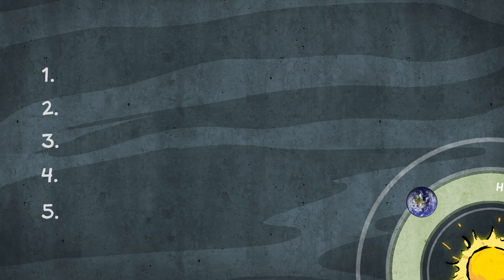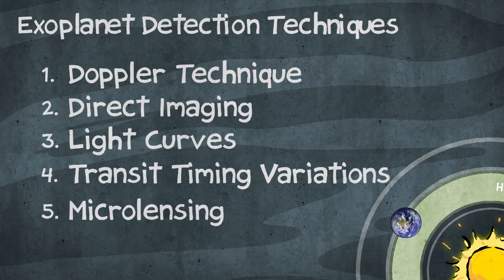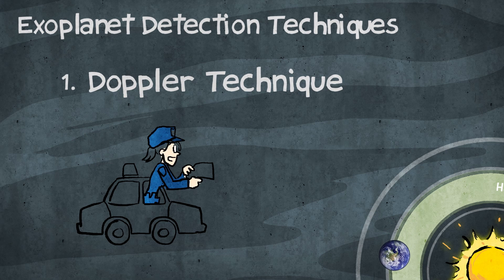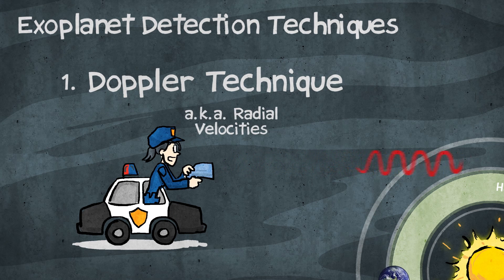Okay, so this is a table of the five most prominent exoplanet detection techniques. The way we discovered the first planet outside of our solar system was using a technique that we call the Doppler technique, or radial velocities.